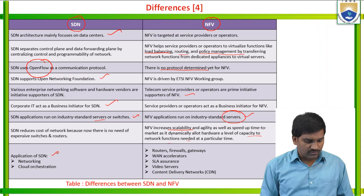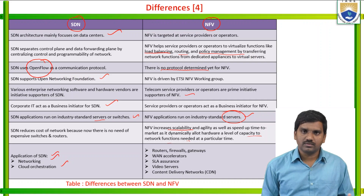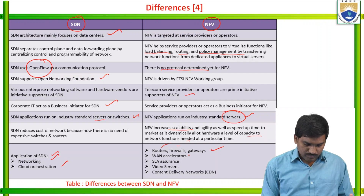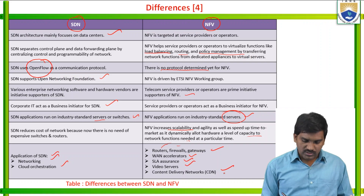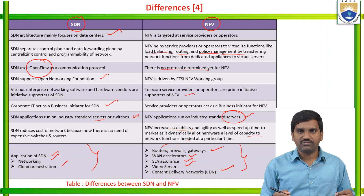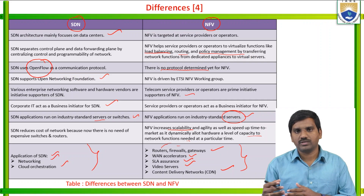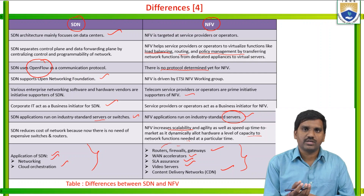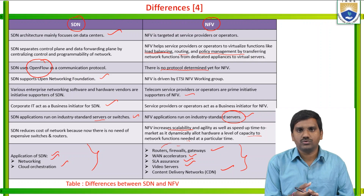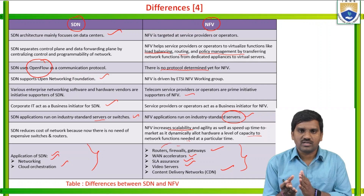The applications of software defined networking include networking and cloud orchestration. The main applications of NFV include routers, firewalls, gateways, wireless area network accelerators, SLA assurance, video servers, and content delivery networks. These applications can also be implemented through IoT devices — wherever you use smart devices, you can use software defined networking, and wherever you operate in virtual mode, you can use network function virtualization.